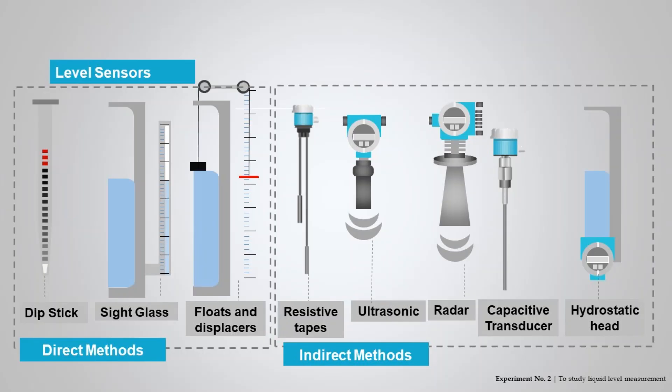Typical direct liquid level measurement methods include dipstick, sight glass, or float and displacer measurement.